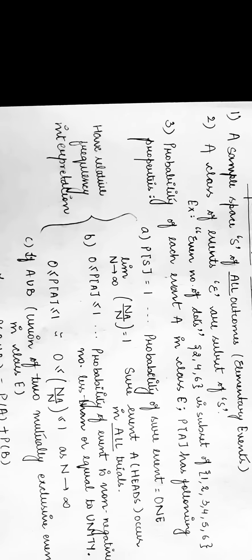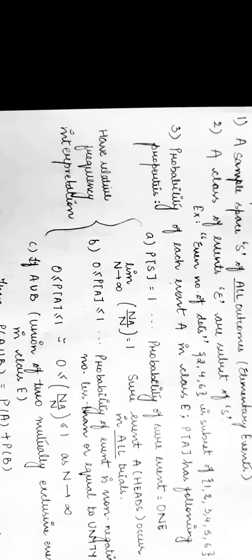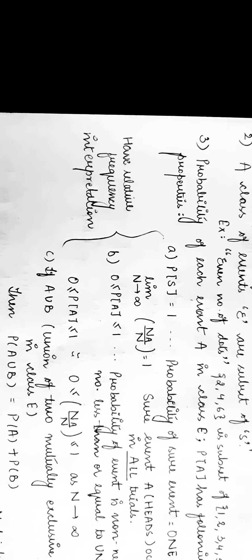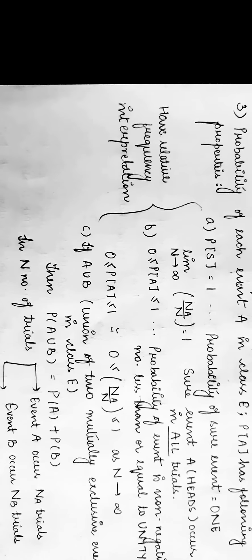Property 2: P(A) is greater than or equal to 0 and less than or equal to 1, meaning the probability of an event is a non-negative number less than or equal to unity. As N tends to infinity, N_i upon N should be between 0 and 1.